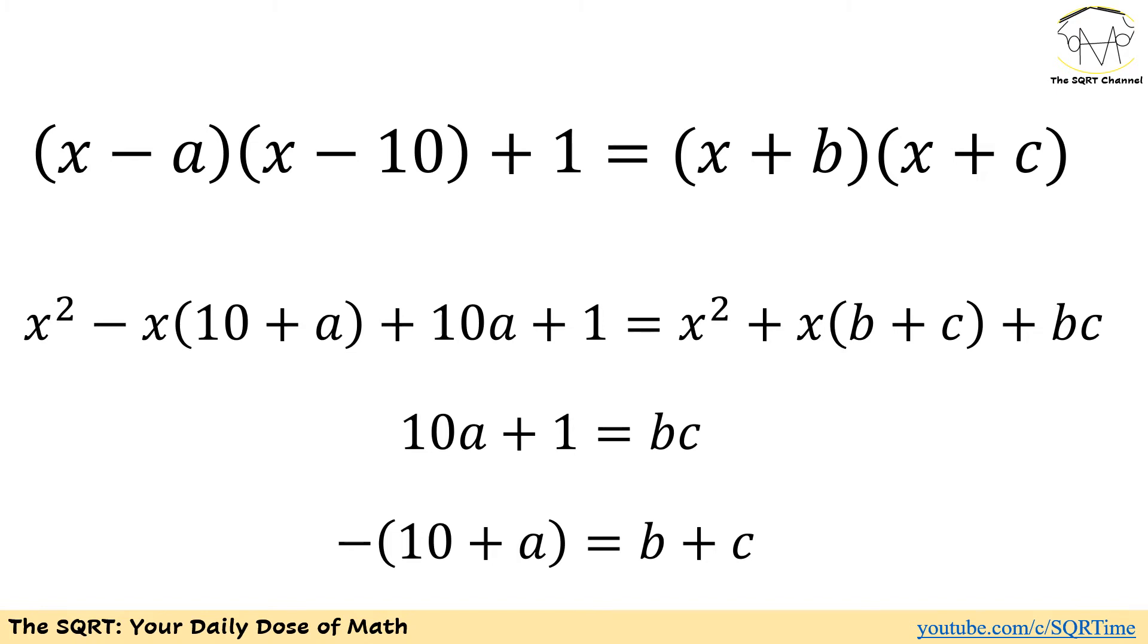On the other hand, we have x² on both sides, we need to remove them. Since 10a + 1 equals bc, -(10 + a) needs to be equal to b + c.